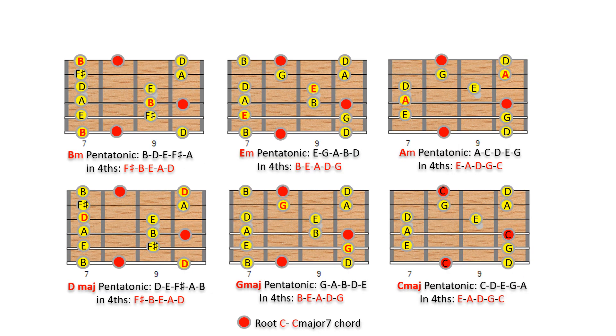There you have it — hacks for superimposing pentatonic scales over C major 7 using the Nandi method. Thanks for watching. If you found this video helpful, please like and share our video.